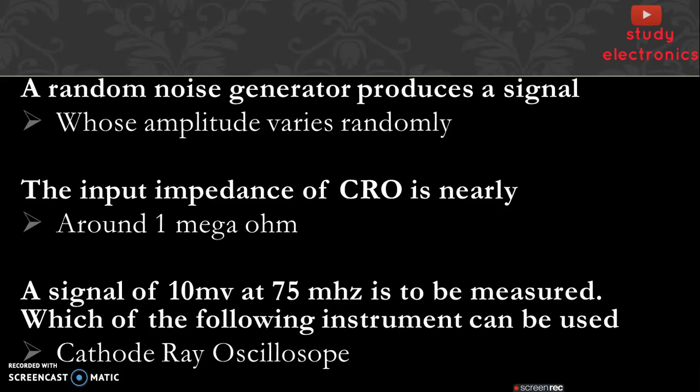First question: a random noise generator produces a signal whose amplitude varies randomly. Next, the input impedance of CRO, cathode ray oscilloscope, is nearly around 1 mega ohm.